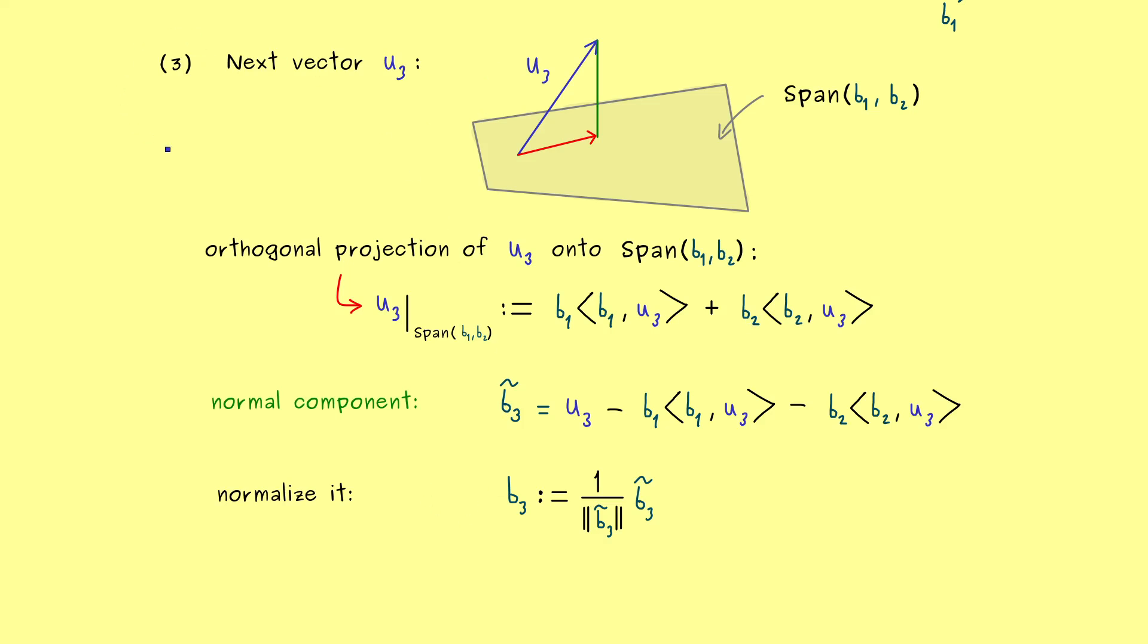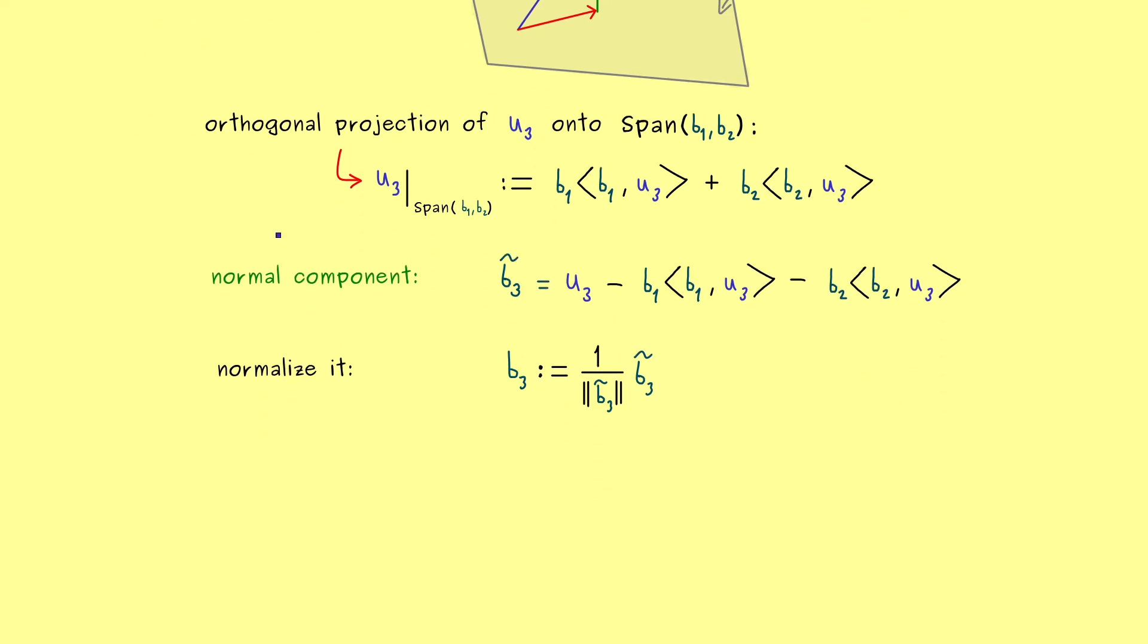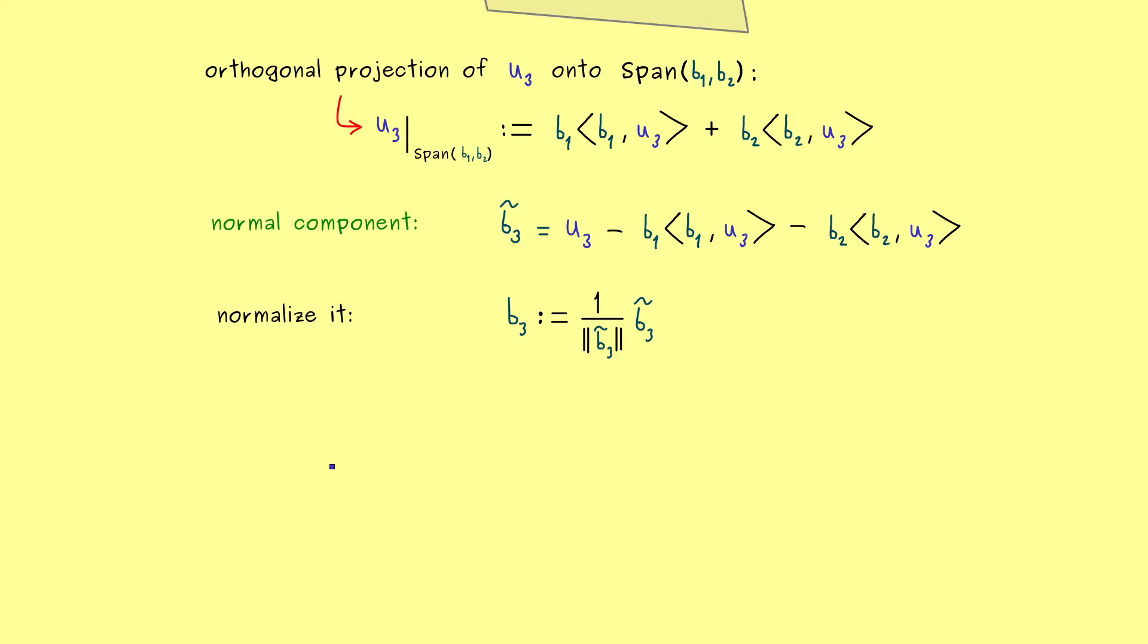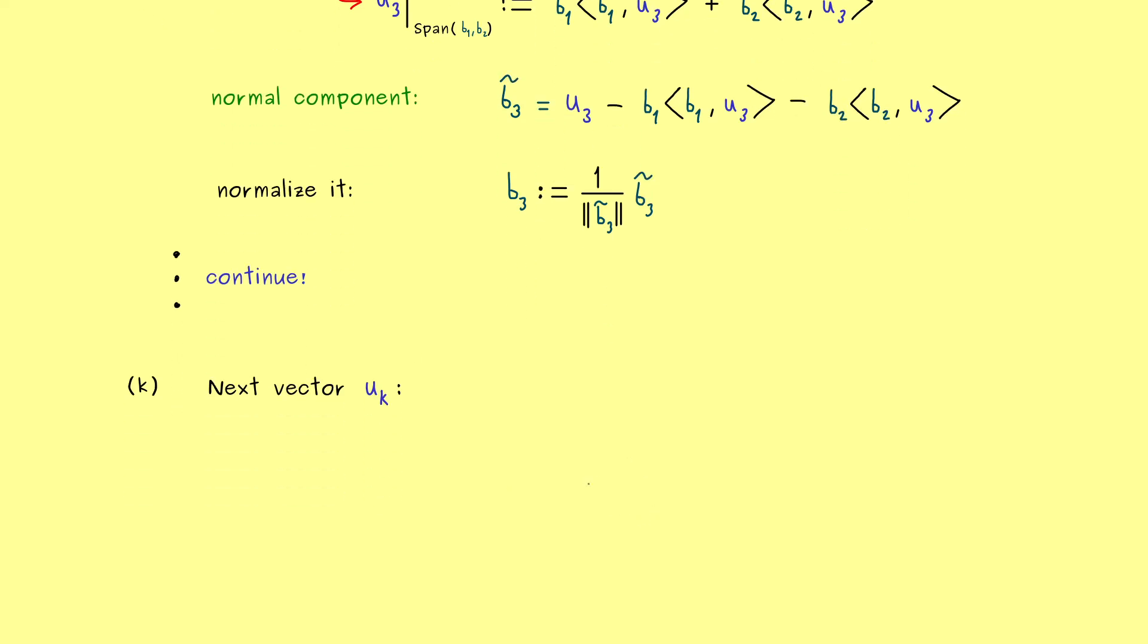In other words, we have to continue these steps here until we reach the kth step. Indeed, as you can see, all the steps look very similar. So it's sufficient to write down the last one. So we have the vector uₖ here and the picture from before can be used again. This simply means we have a subspace spanned by the vectors before. So this represents a k-1 dimensional subspace. So in the span we have b₁, b₂ and so on until we reach bₖ₋₁.